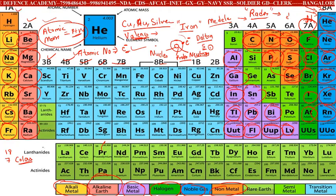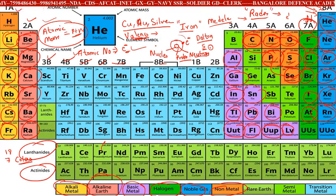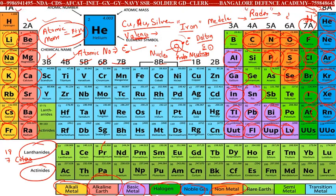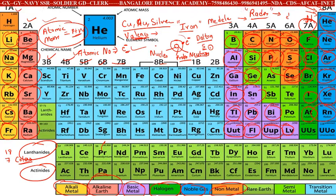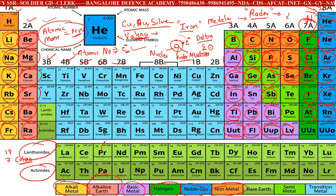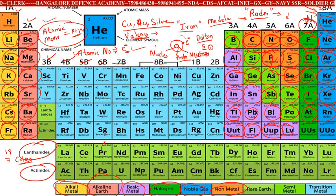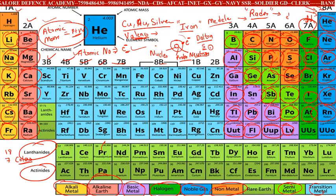Rare earth metals are mentioned as lanthanides and actinides. Semi-metals, shown in light green color, include boron, silicon, germanium, arsenic, antimony, tellurium, and polonium. These are all semi-metals.